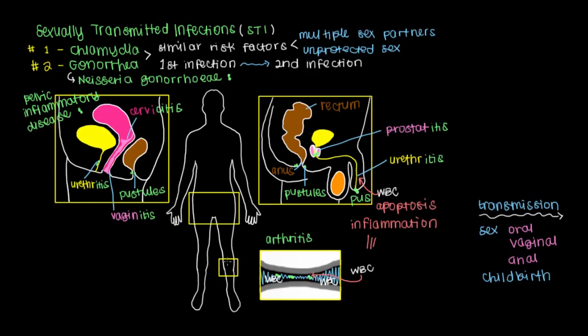Left untreated, gonorrhea can also spread to the central nervous system. Gonorrhea can infect the lining around the brain and the spinal cord. This lining is referred to as the meninges, and an infection of the meninges is referred to as meningitis. Unfortunately, gonorrhea meningitis is more common in children than it is adults.